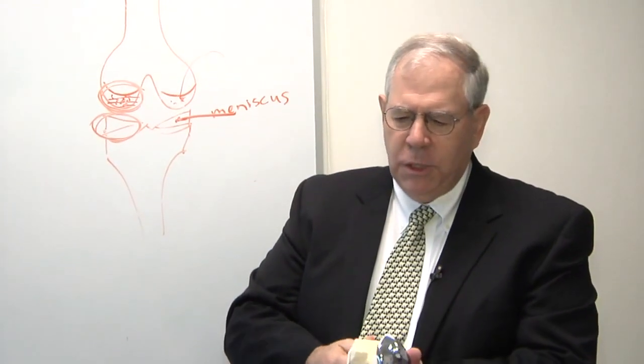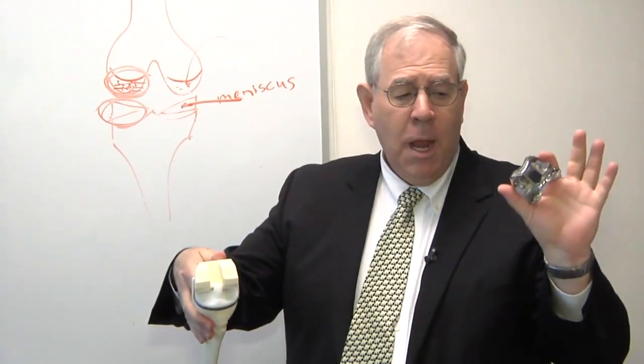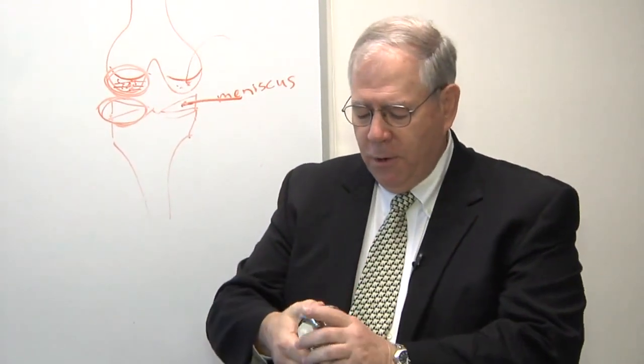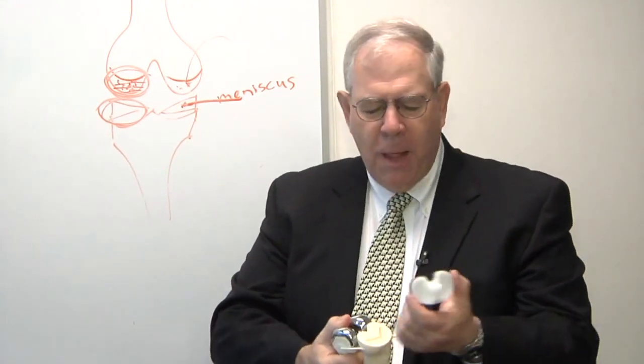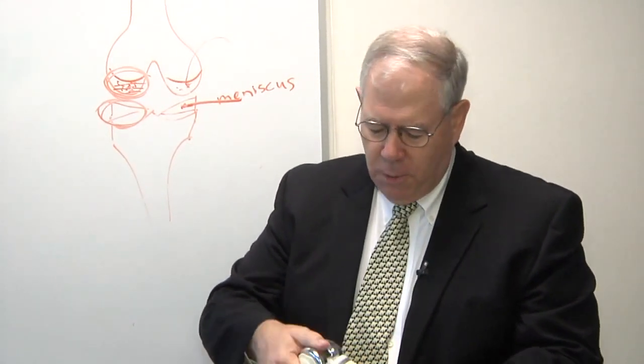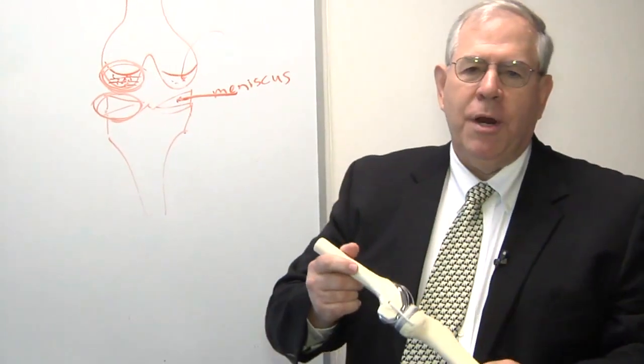What we end up doing is that we reshape the end of the thigh bone and put a metal covering on the end of the thigh bone and a little plastic spacer that sits on the top of the tibia or the shin bone. So it's really more like retreading a tire.